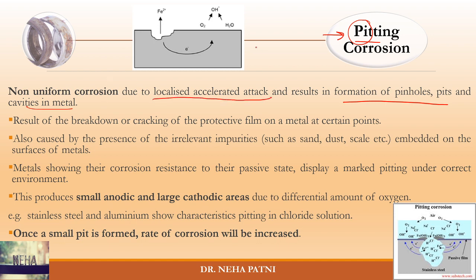This type of corrosion is a very localized, accelerated attack. It is also known as non-uniform corrosion because it does not uniformly take place on the surface — it only occurs at a particular place, which is an area having a certain kind of impurity.